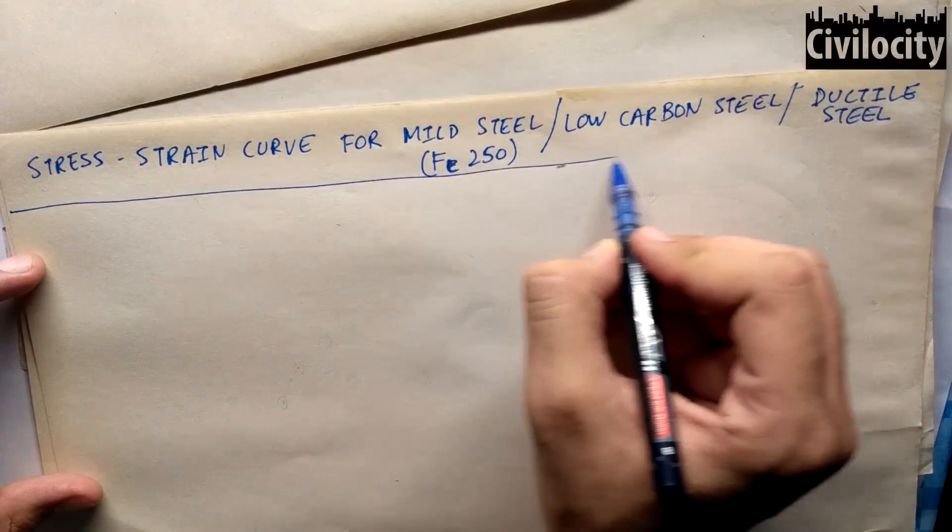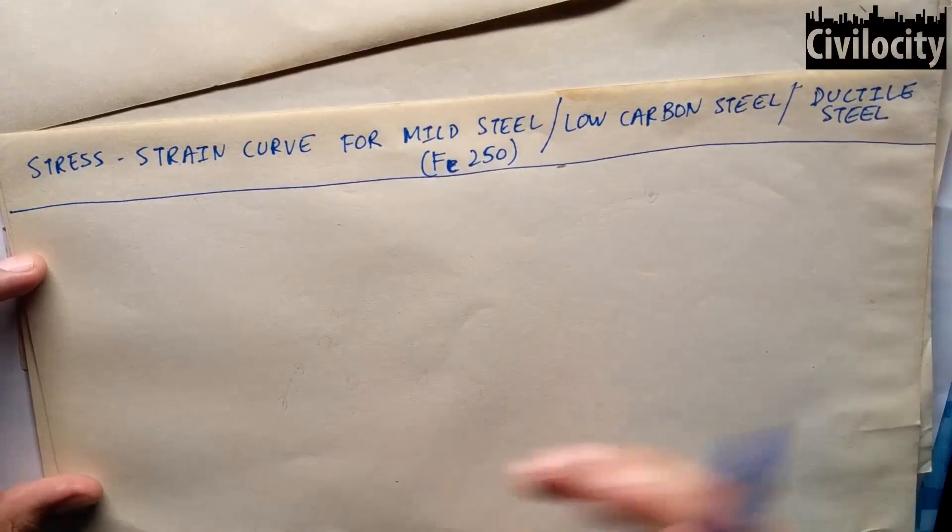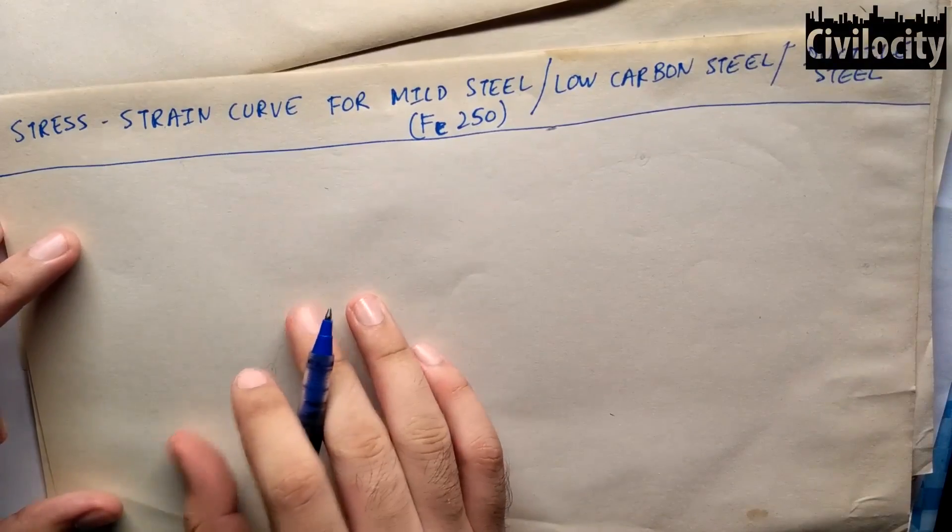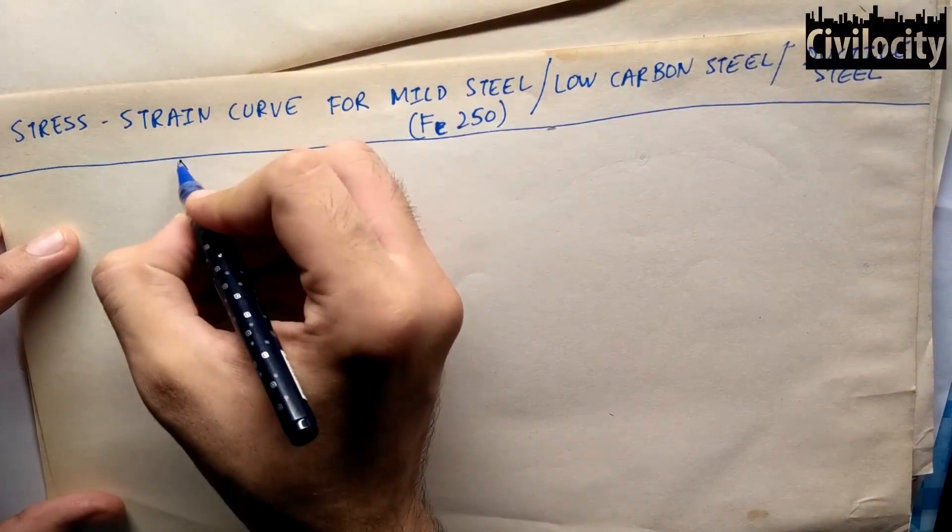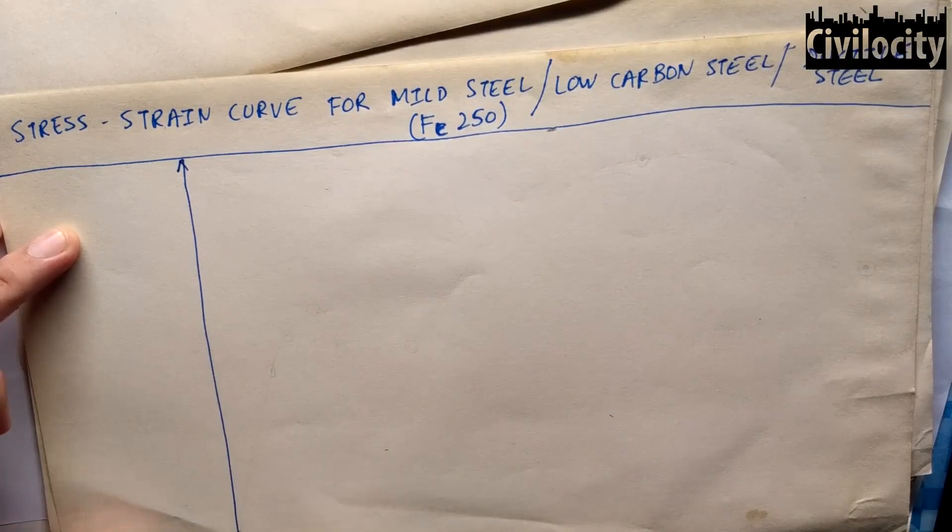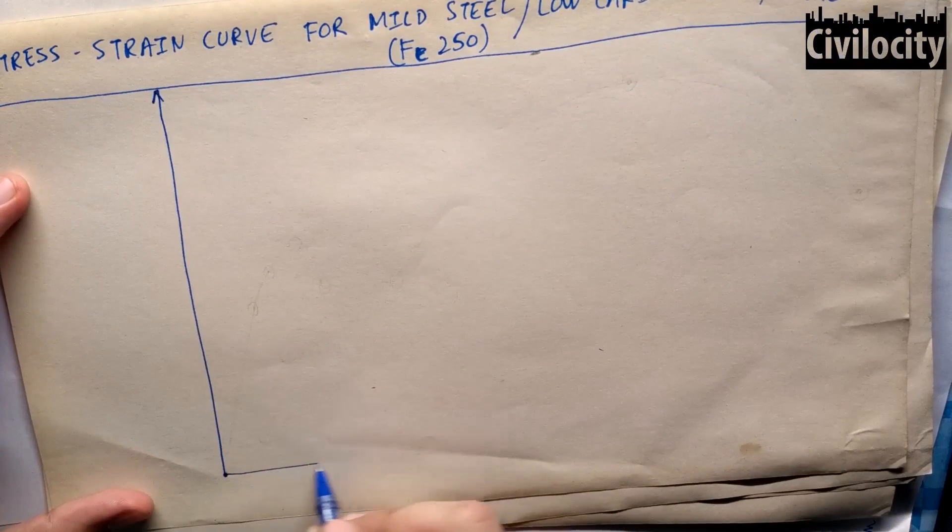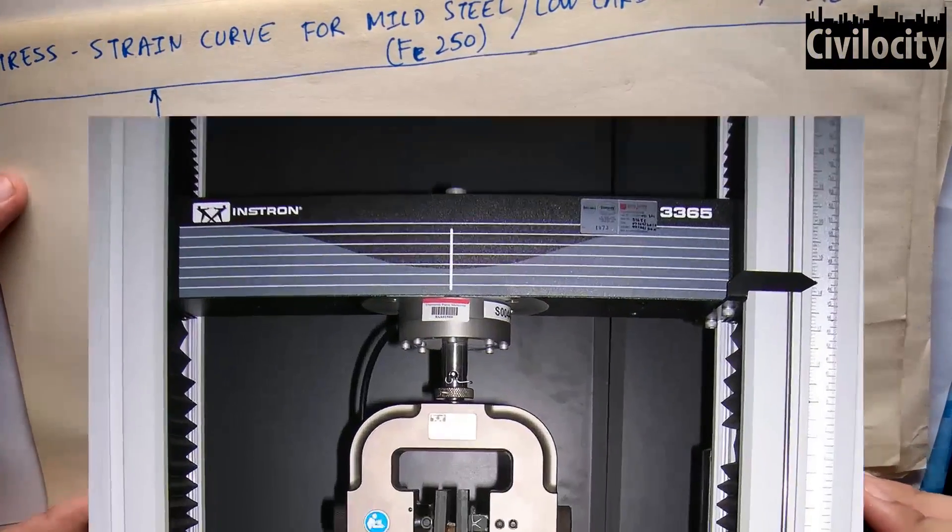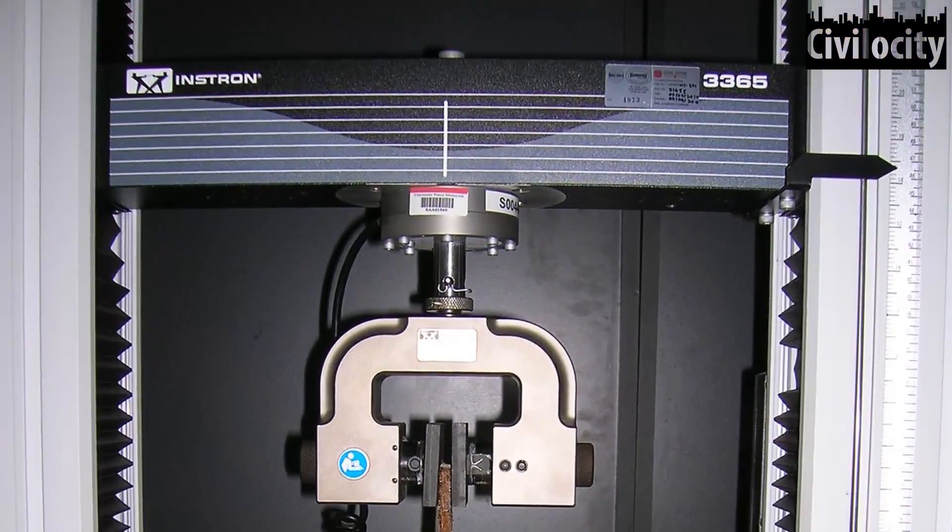Stress strain curve is a curve drawn between stress and strain values of a mild steel specimen tested on a universal testing machine. The machine is called universal because it can be used for measuring shear, tension, compression, flexure, torsion etc. It is done to record the amount of deformation in the specimen and to reveal the properties of material.